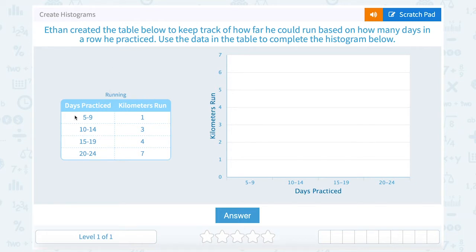Well, if I look at the table I can see when he practiced five to nine days in a row he ran one kilometer. So I'm going to go to my graph and where it says five to nine on the x-axis, I'm only going to bring that up to one because my value here in the y table is one, or in the y column is one.